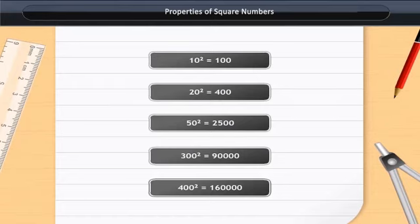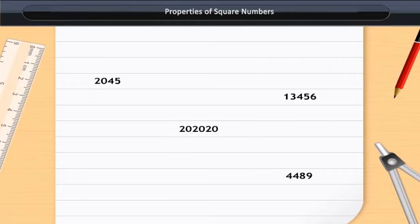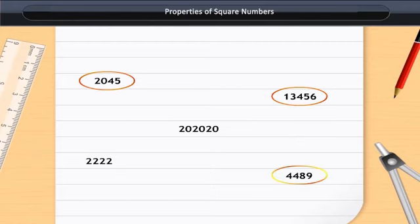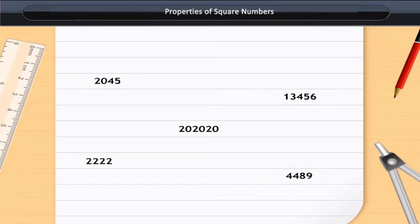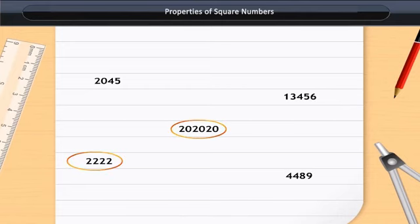This means that we can tell whether a number with 0 at the units place is a perfect square or not by just looking at the number of zeros at the end of that number. Numbers like 204513, 456, and 4489 can be perfect squares because they end in 5, 6, and 9. Whereas numbers like 222222 and 202020 are not perfect squares because 222222 has 2 as the last digit, and 202020 has an odd number of zeros at the end.